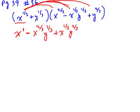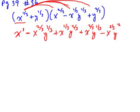Now we multiply y to the one-third times x to the two-thirds. Going in alphabetical order, that gives us x to the two-thirds y to the one-third. Then y to the one-third times negative x to the one-third y to the one-third: adding the y exponents gives minus x to the one-third y to the two-thirds. Finally, y to the one-third times y to the two-thirds equals y to the first, just like our first term.